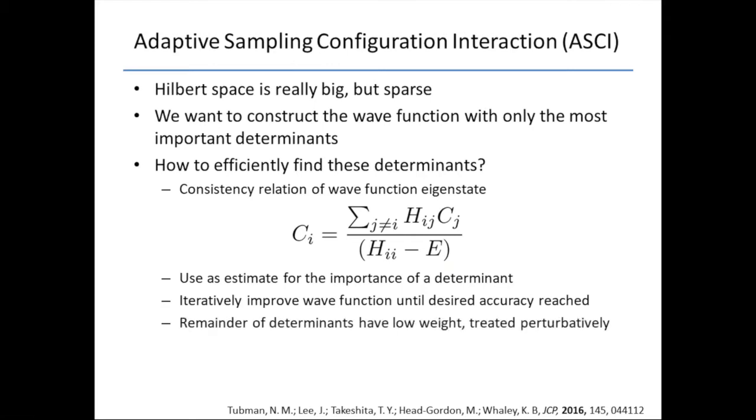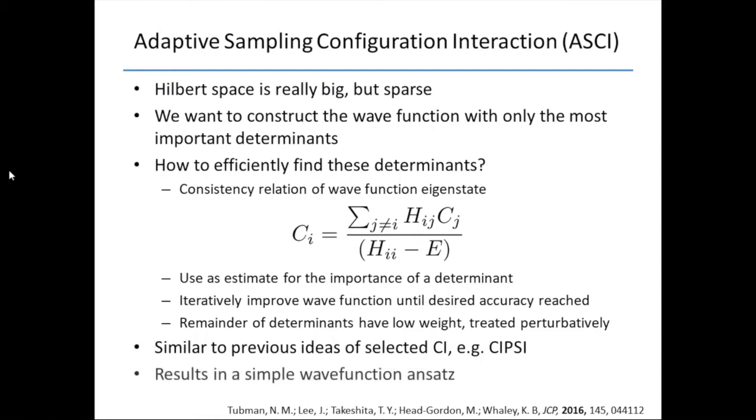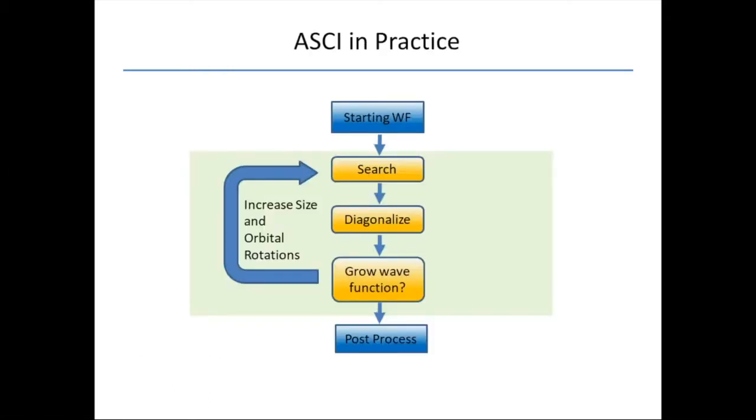So how do you find those without actually solving the whole Hamiltonian? There's a consistency relationship among the coefficients of a wave function eigenstate, namely that you can get the coefficient of a given determinant based on how it connects to other determinants. We can make an estimate for the importance of any given determinant based on how it connects to our trial wave function. You can iteratively build this up into a wave function that incorporates more of the most important determinants until a desired accuracy is reached. Everything that's left over is ideal for treating with perturbation theory.